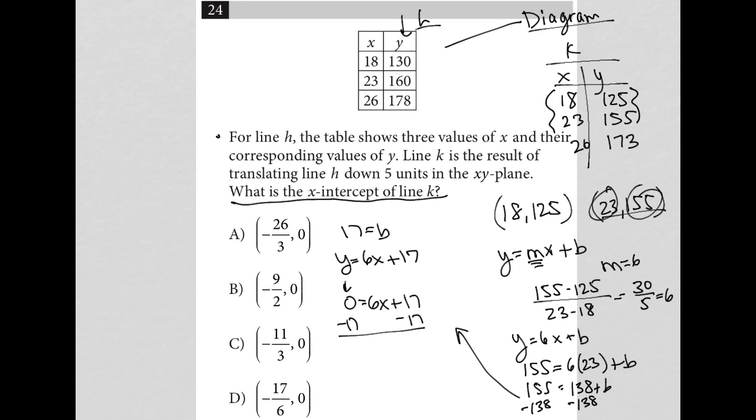I end up with negative 17 equals 6X. Divide both sides by 6, and I'm left with X is equal to negative 17 over 6. There's my X intercept.